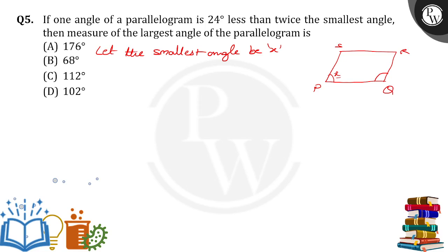If angle P is equal to X, then angle Q is equal to what? Twice the smallest angle means 2 times X less than 24, which is 2X minus 24. So this is the value of Q.